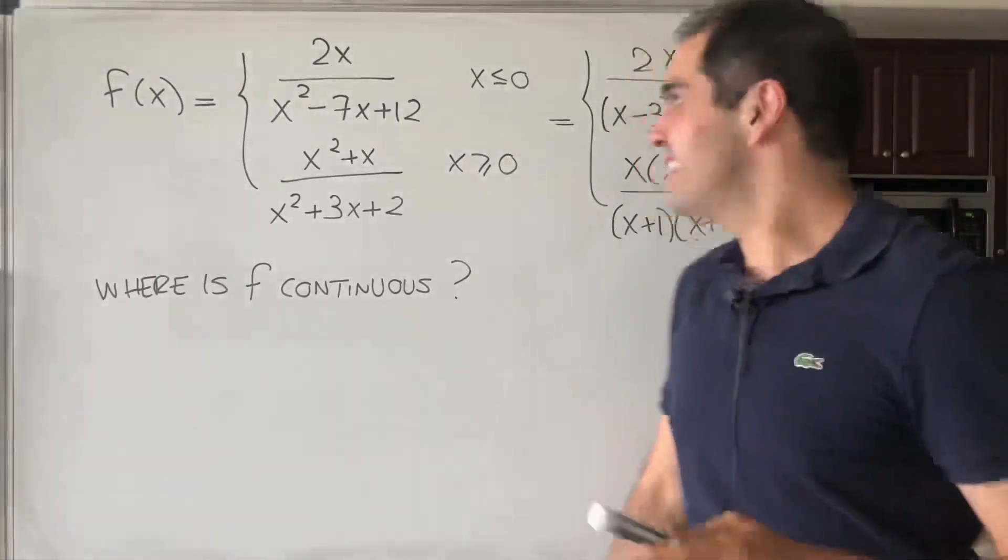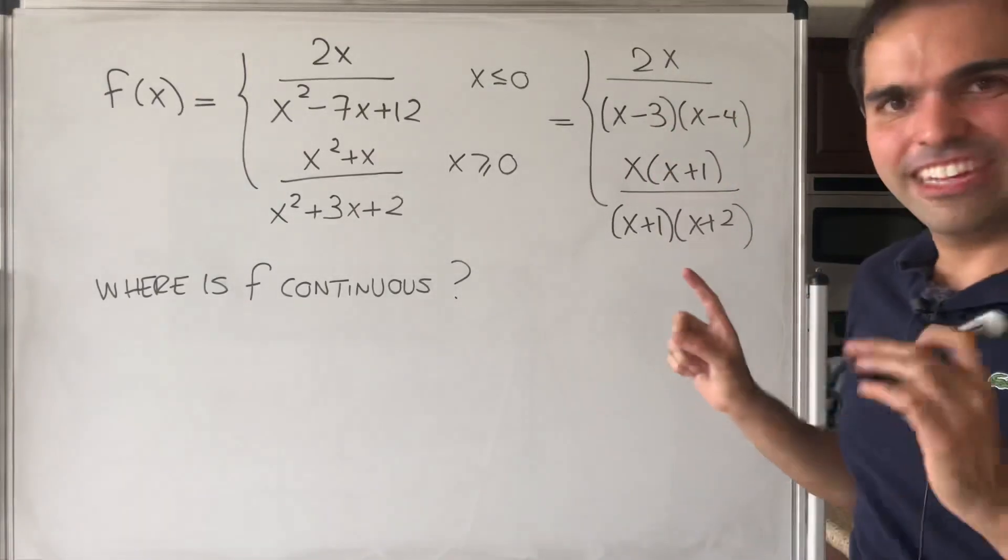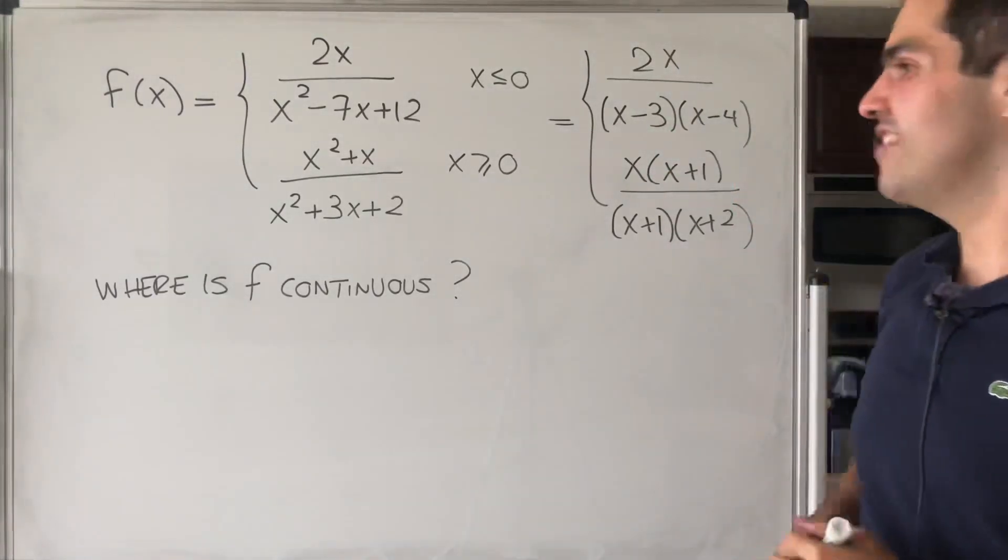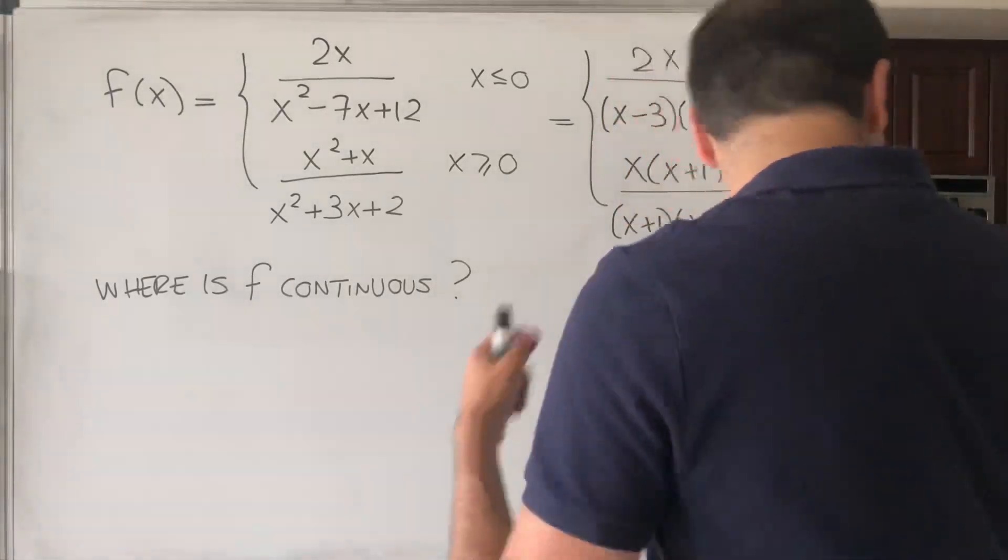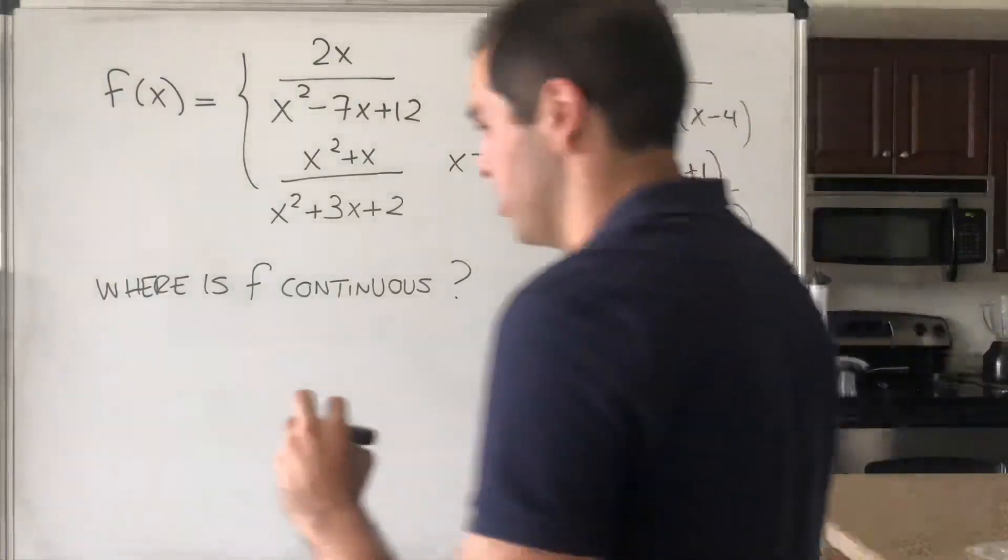Now, you might be tempted just to say it's discontinuous at 3 and 4, but you have to be very careful. And in particular, what we have to do, first of all, let's check if it's even continuous at 0.